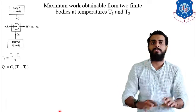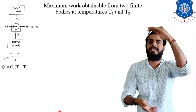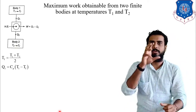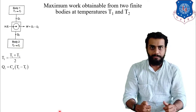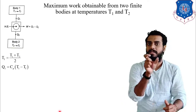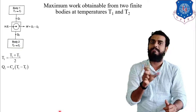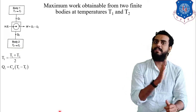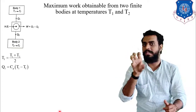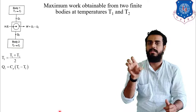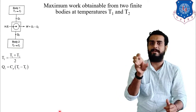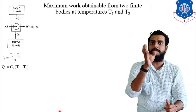At one point, both the hot body and the cold body will attain the temperature Tf. At that time no work will be produced because both bodies are at the same temperature — that is called the equilibrium state. That is why Tf is considered the final temperature for both bodies, and Q1 equals Cp(T1 minus Tf).